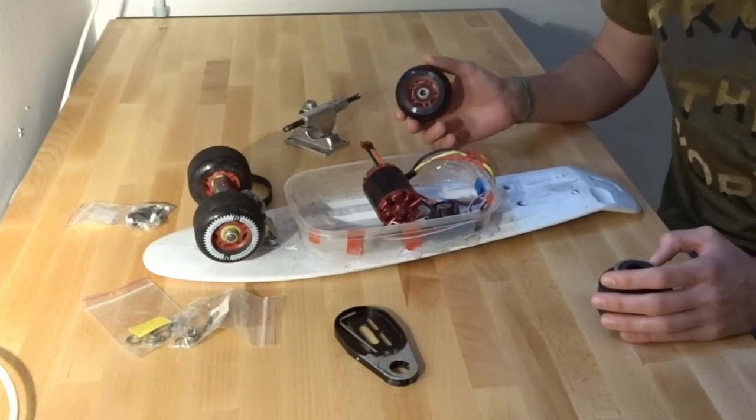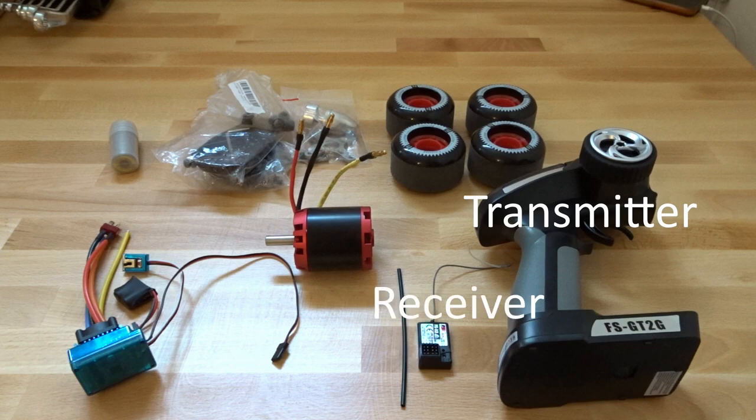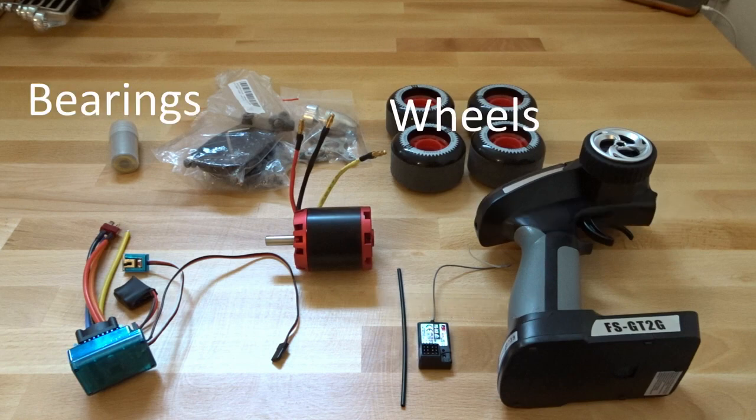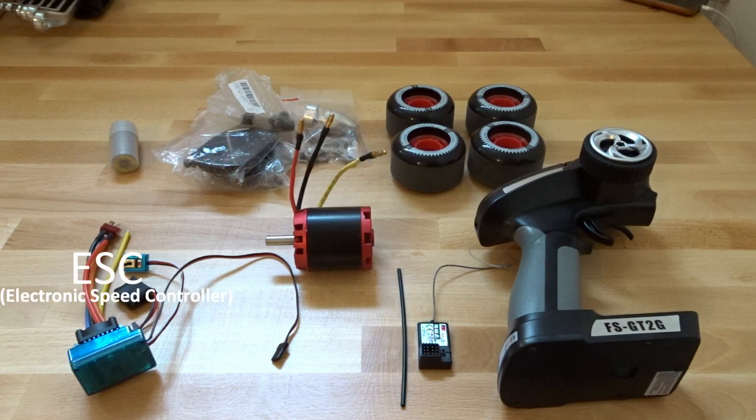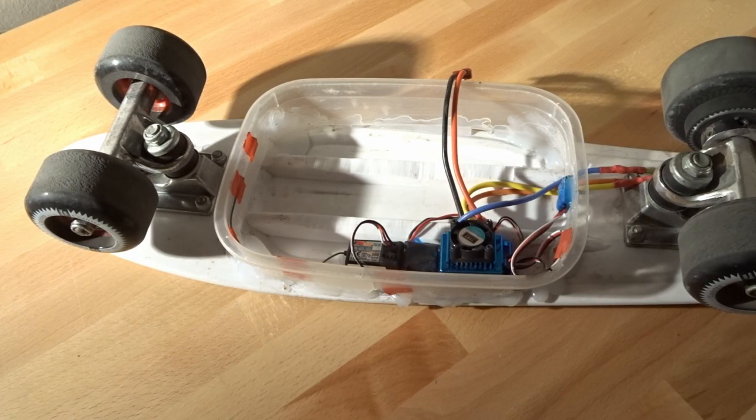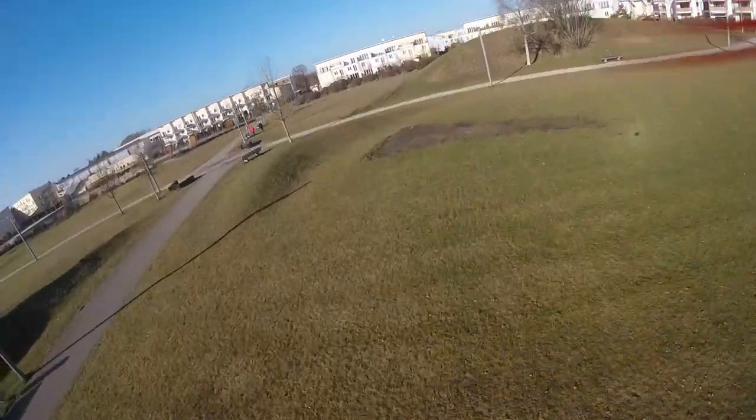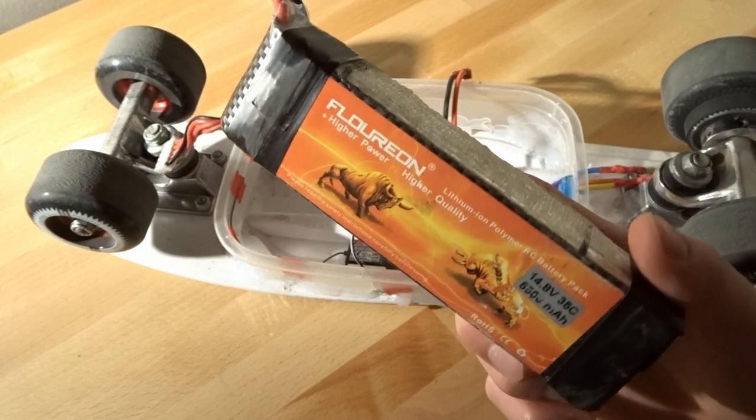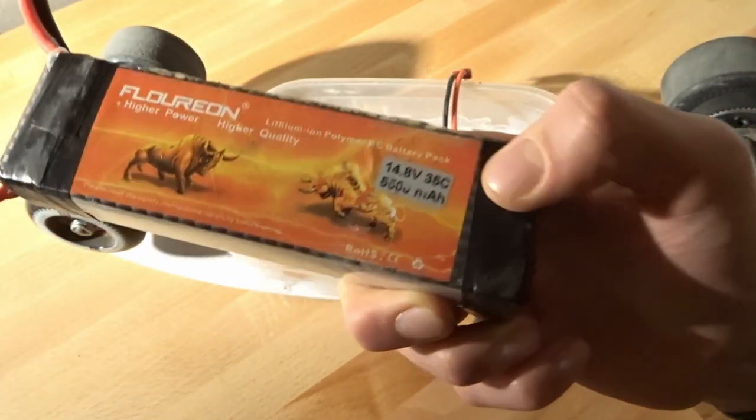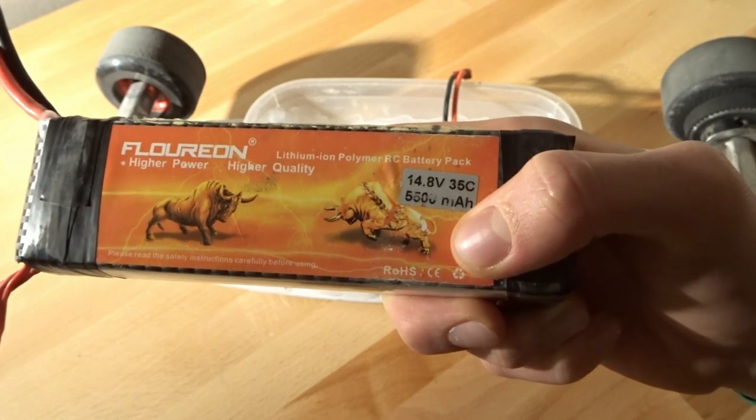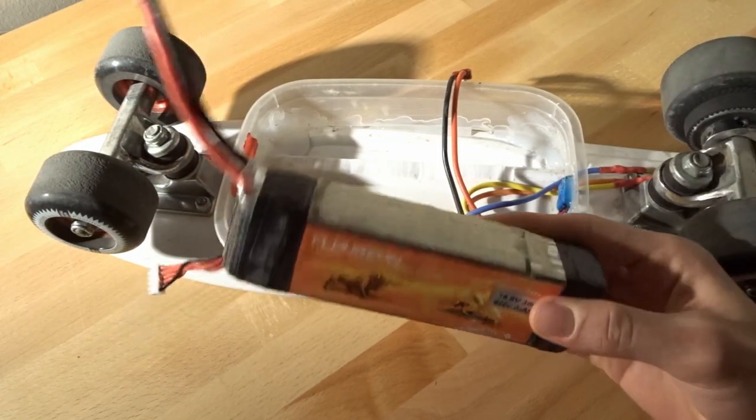So what did I order? A transmitter and a receiver, the wheels and the bearings for the wheels, motor, the motor mount, and the electronic speed controller, the ESC. One part that I didn't have to buy for this project was the battery because I already had a four cell battery for my quadcopter that I built previously. You will probably have to spend about 40 to 50 euros for a four cell battery with a capacity of 5.5 amp hours.